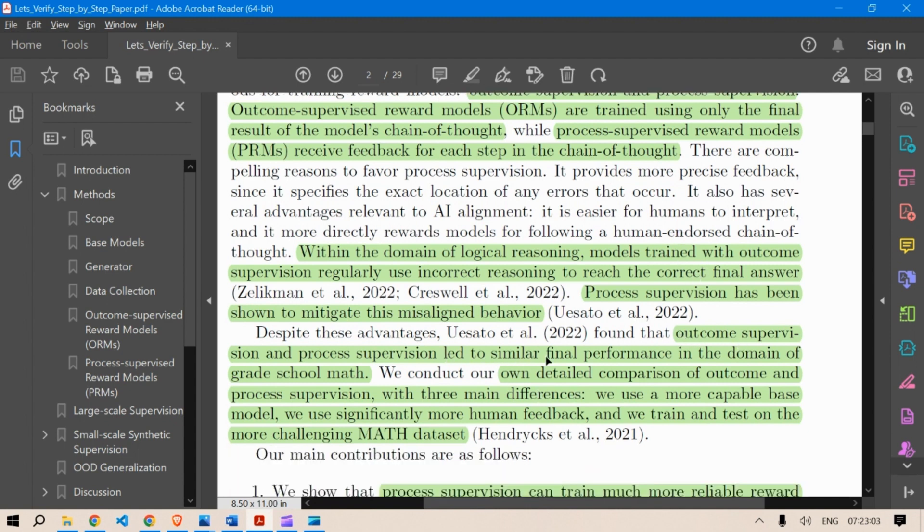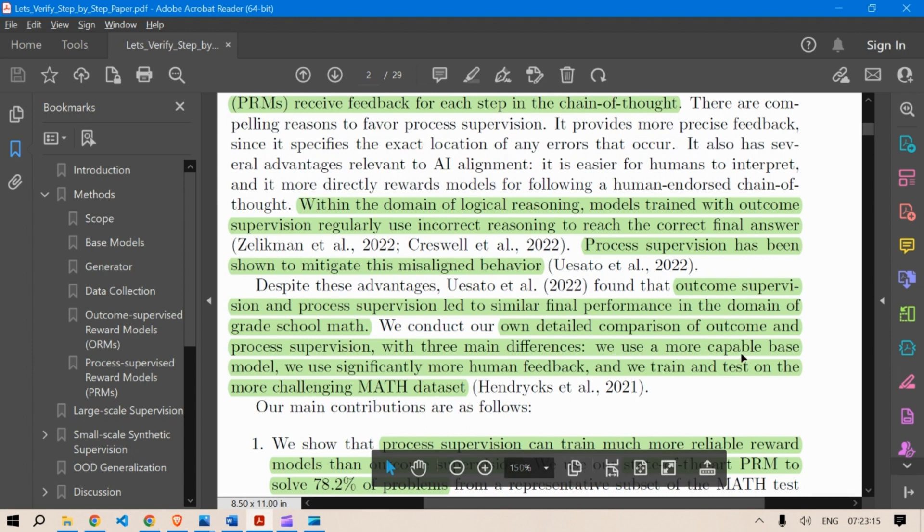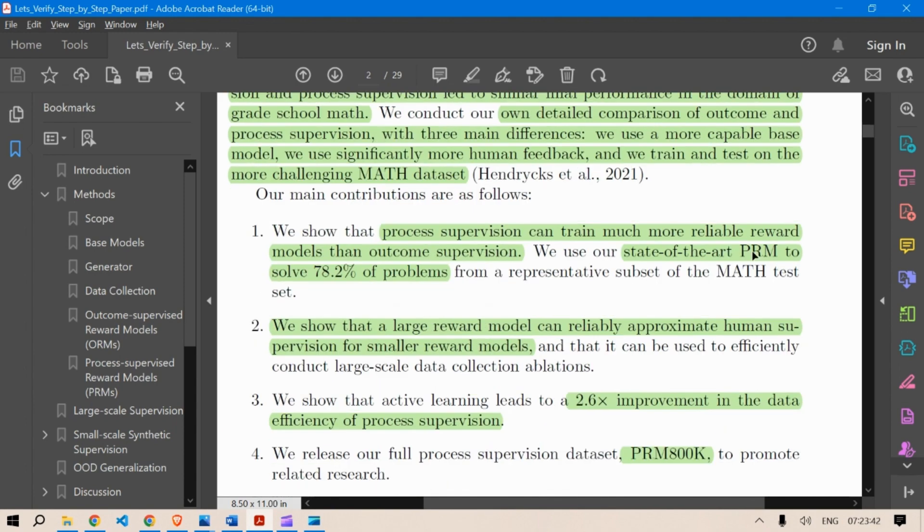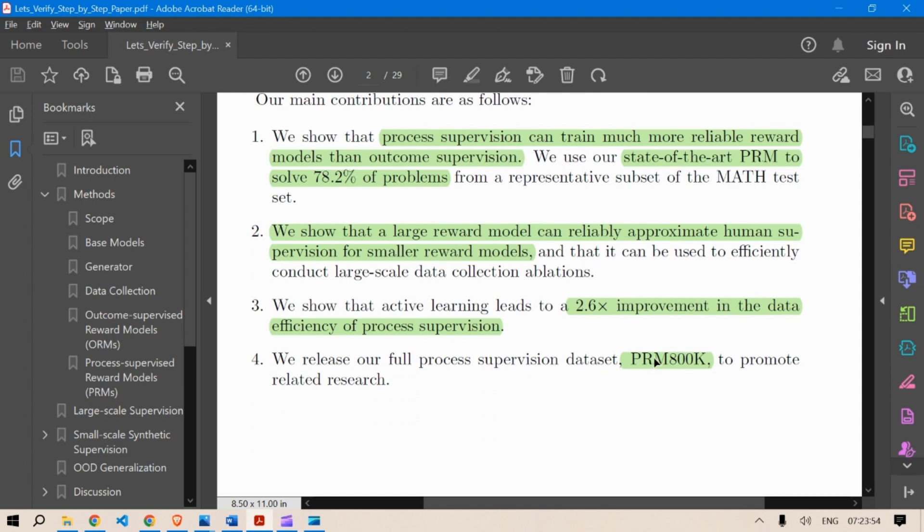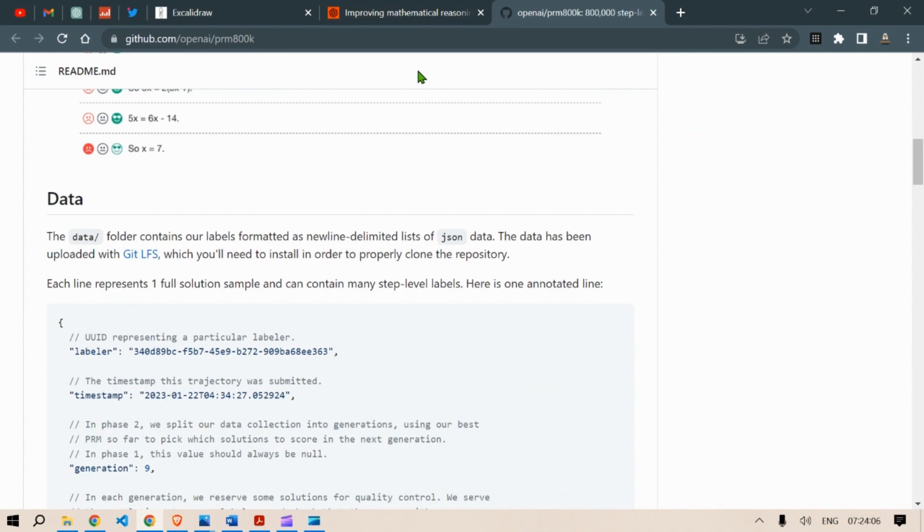Outcome supervision and process supervision lead to similar final performance in the domain of grade school math, but OpenAI have conducted their own comparison of outcome and process supervision with three main differences. They used a more capable base model, they used significantly more human feedback, and trained tests on a more challenging math data set. They were able to show that the process supervision can train much more reliable reward model than outcome supervision, state-of-the-art process supervised reward model to solve 78.2% of the problems. It has 2.6 times improvement in the data efficiency of process supervision, and they have also released the PRM 800K data set, which can be found here. So, they have released this data set to further the cause of future research in this field.